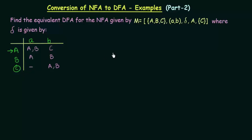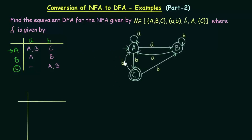Before we proceed, let us draw the state diagram for this NFA. We have 3 states A, B, C. A on getting input a goes to A itself and also to B. A on getting input b goes to state C. State B on getting input a goes to state A, and on getting b it stays in B. C on getting input A does not go anywhere, and C on getting input b goes to both state A and state B. Now we will convert this to the equivalent DFA.